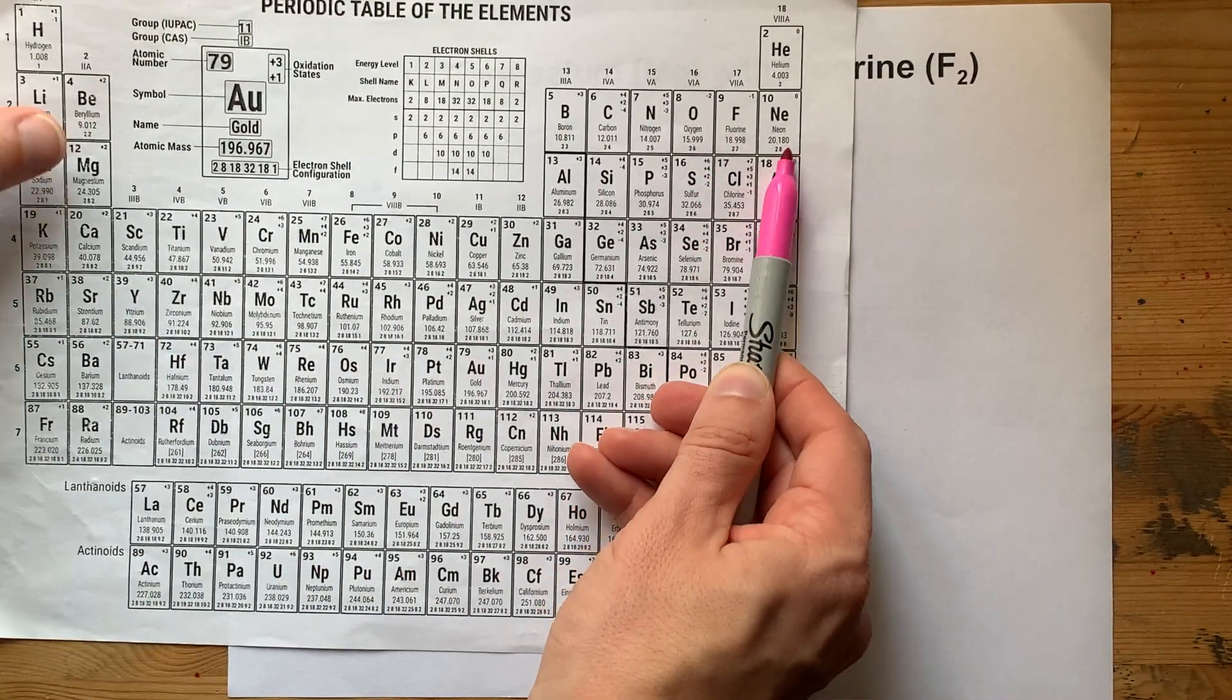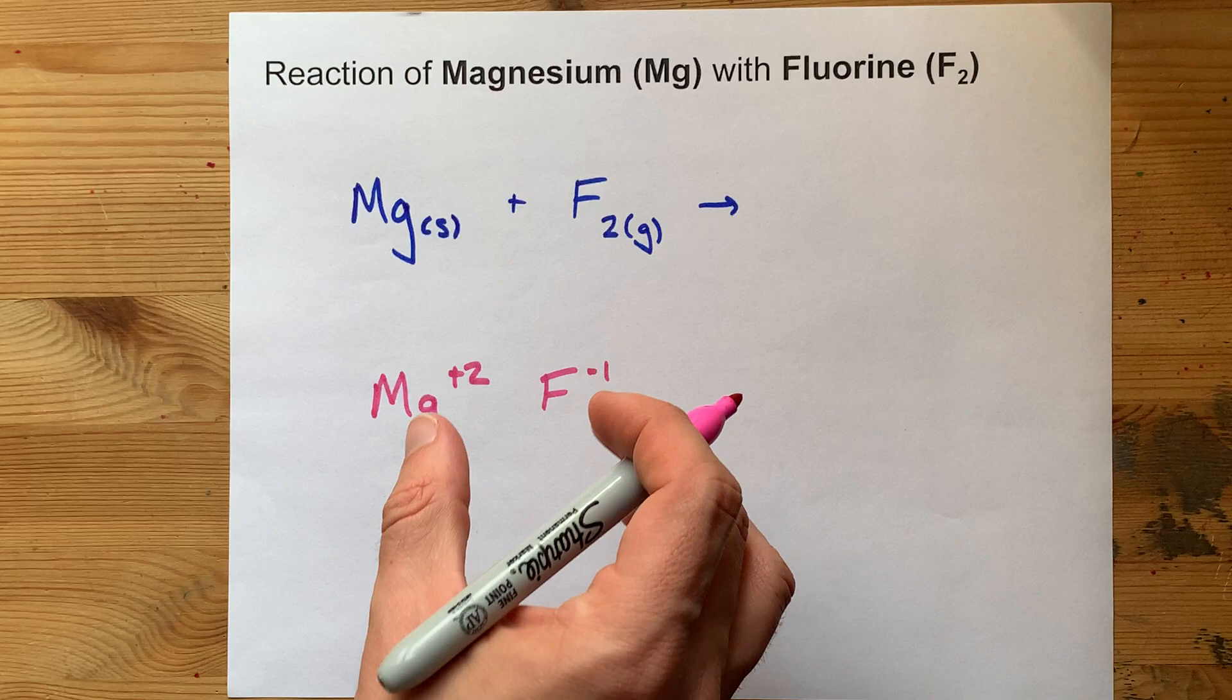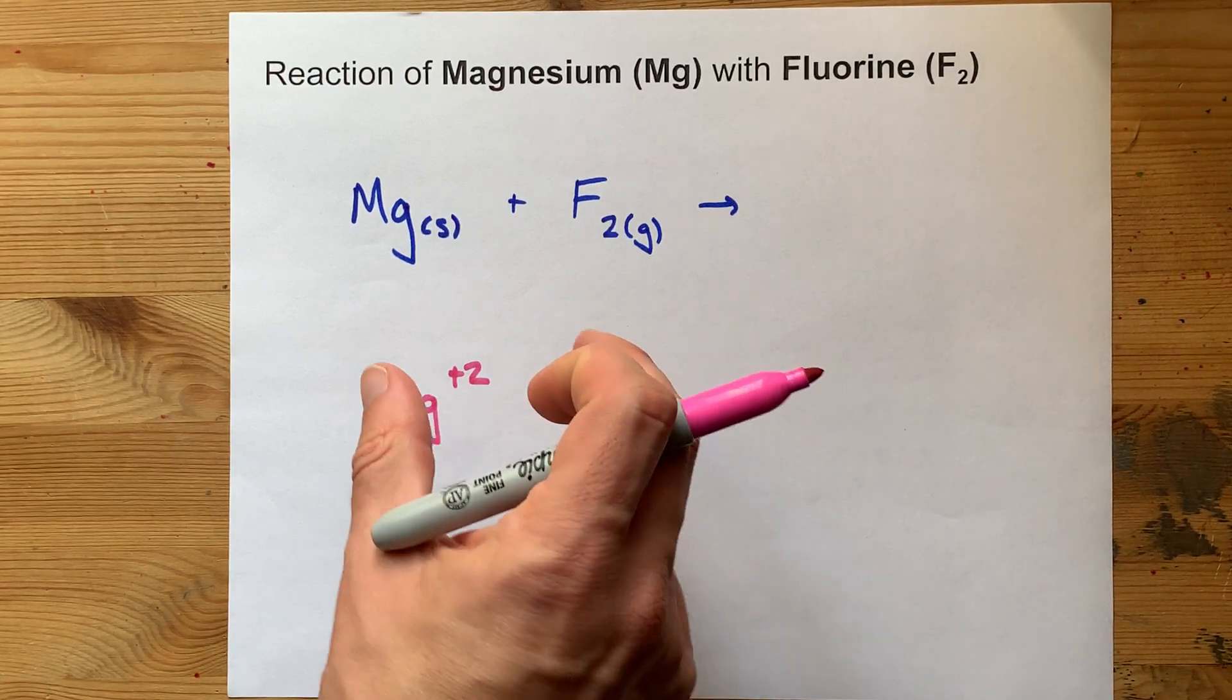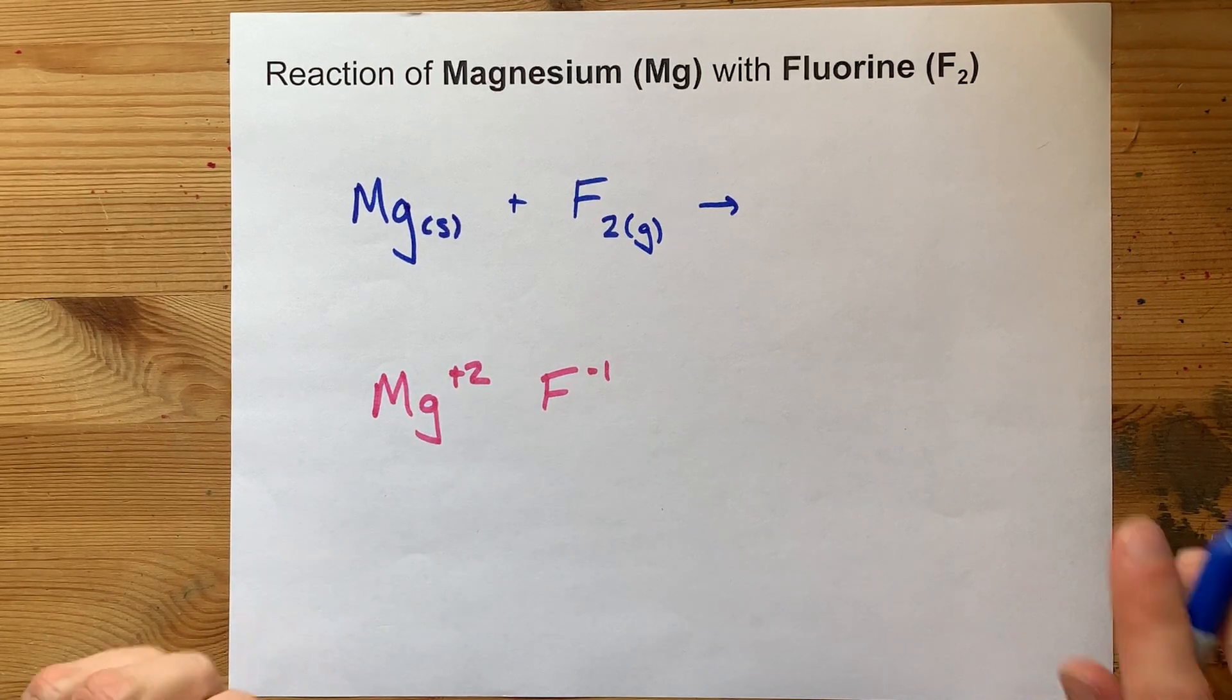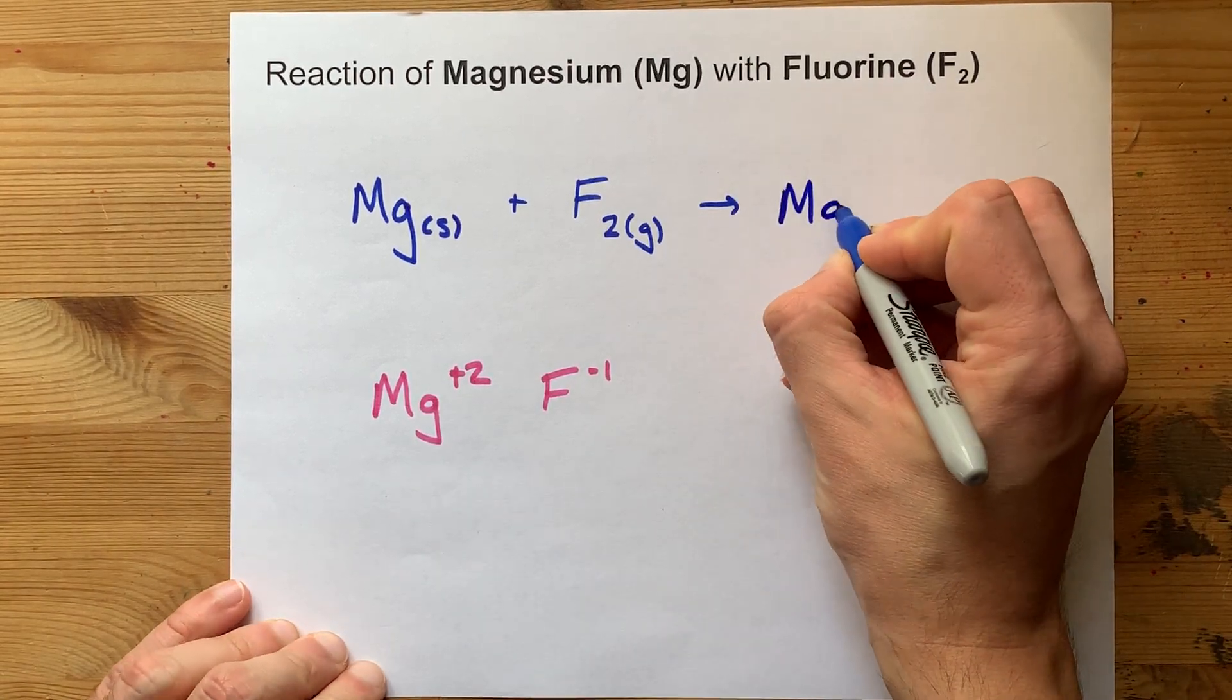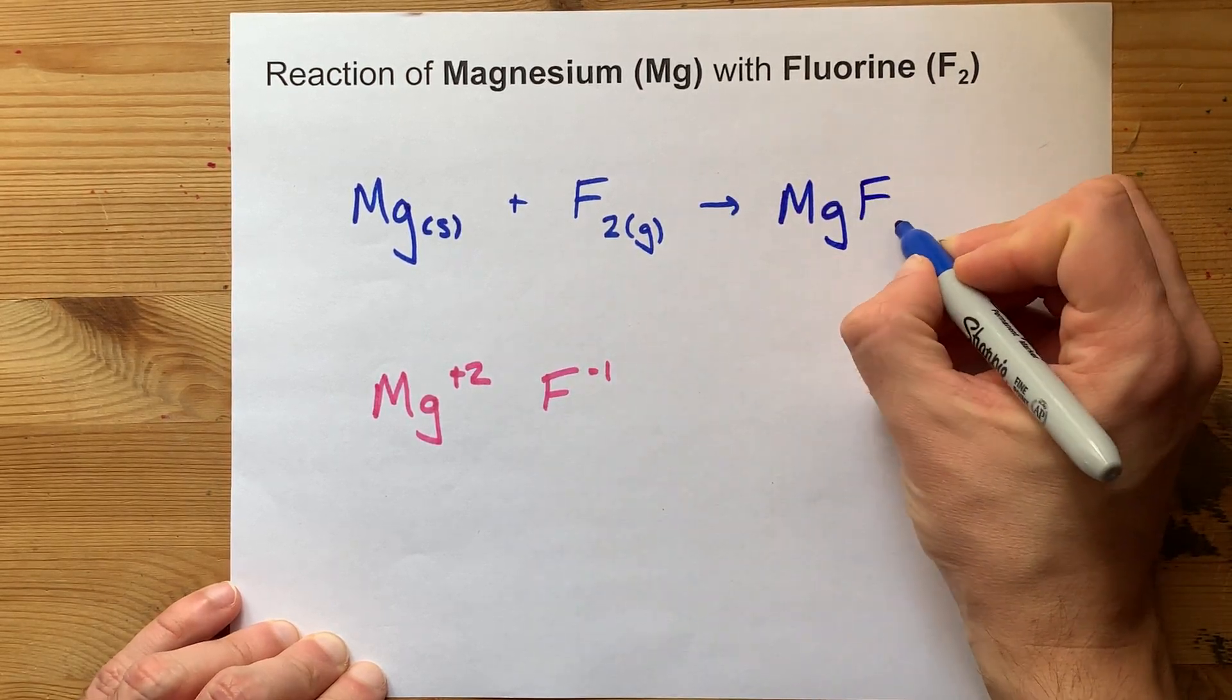It is one electron short of having a full octet. And to create the product of these two ions, we crisscross the charges. That one comes down onto the Mg. That gives us Mg1, but we don't write one. And the fluorine gets the two from magnesium.